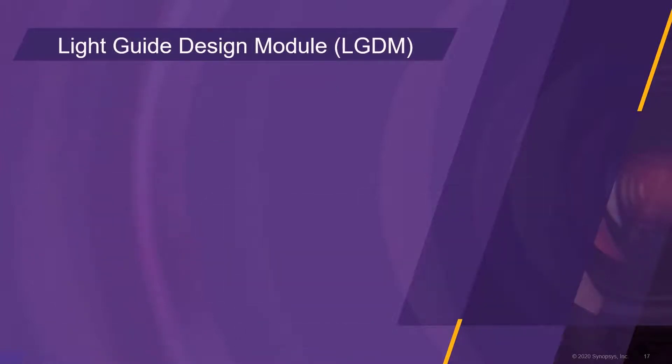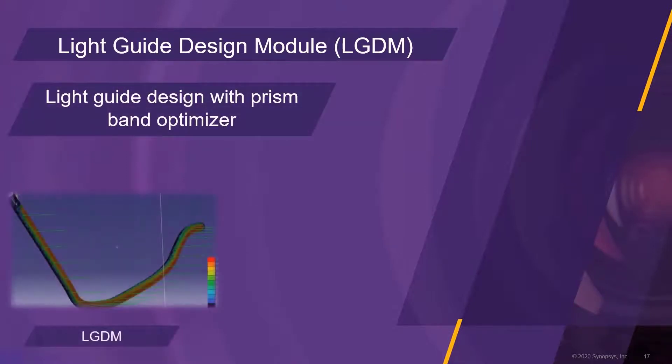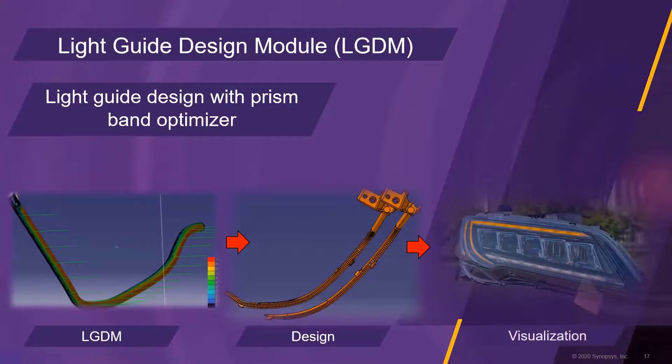The light guide design tool creates light guides with optimized light extractors, providing uniform lit appearance and light direction control. A typical application for such light guides are signal lamps, such as turn indicators or daytime running lights.